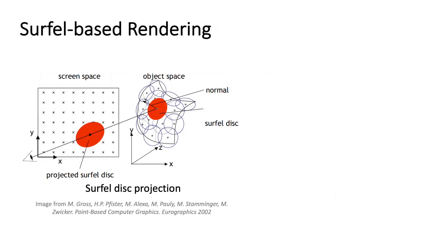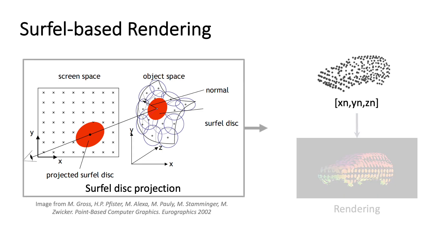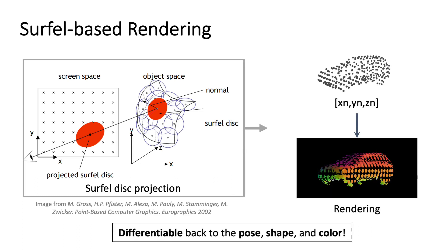The second component is a surfel-based renderer. In the computer graphics domain, the concept of surface elements, or surfels, is a well-established alternative to connected triangular primitives. Our differentiable SDF representation yields oriented points and can be immediately used to render surface disks. The result accurately represents the geometry of the object and is differentiable with respect to the input.